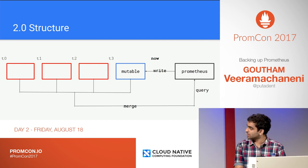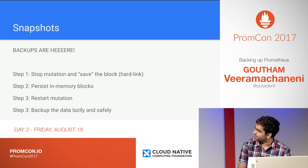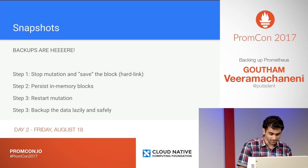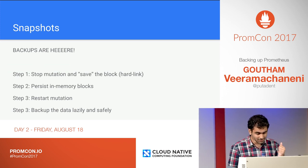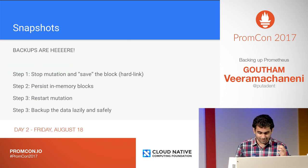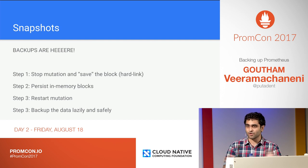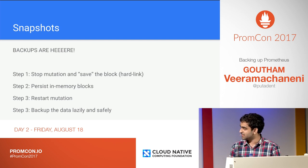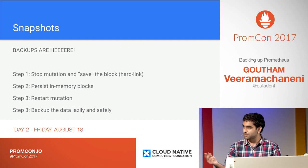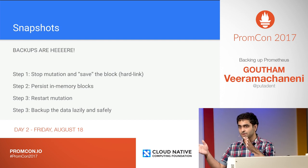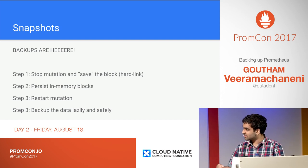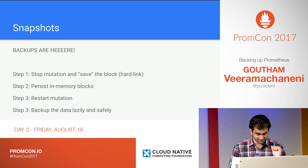Snapshots are done in four steps. First, you stop all compactions for about five minutes and hard link the blocks. Step two, you take the in-memory block and persist it, then you restart the mutation and you're done.